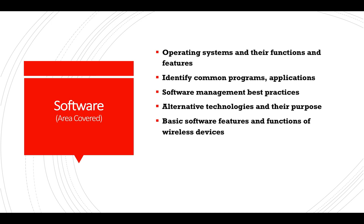There are other things to learn about common programs, applications, and their purpose — you need to be able to identify those. And here are some common file types like documents, audio file types, image, video, and executable file types. Another important thing in the software section is software management best practices, like installing or uninstalling OS features, applications, drivers, driver updating, software version identification and compatibility, and licensing like product keys, single or multi-license. This is very important to learn because it's about 21% of the software portion of this exam.